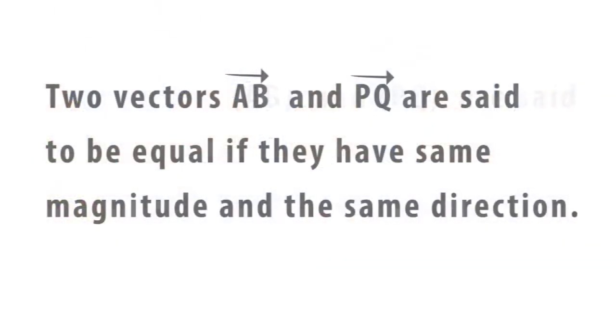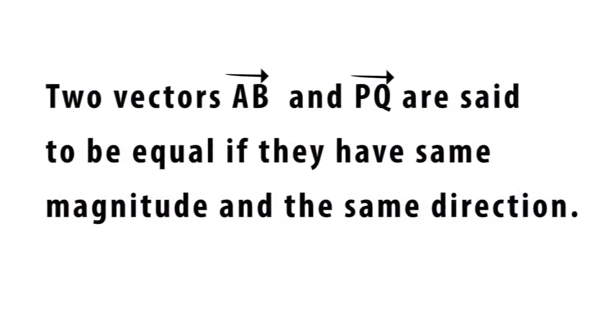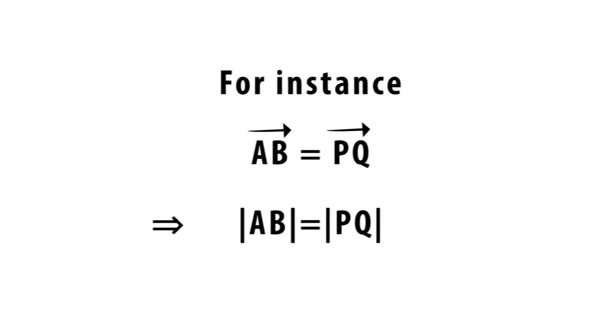I want us to begin with equal vectors. Two vectors AB and PQ are said to be equal if they have the same magnitude and the same direction. For example, if vector AB is equal to vector PQ, then the magnitude of AB should be equal to the magnitude of PQ.